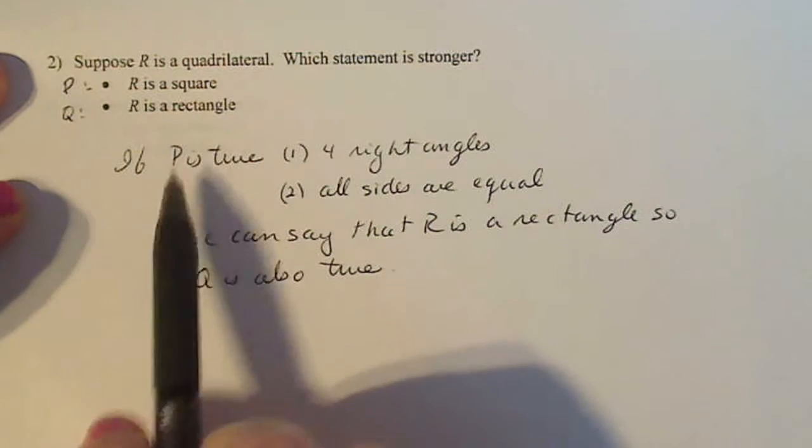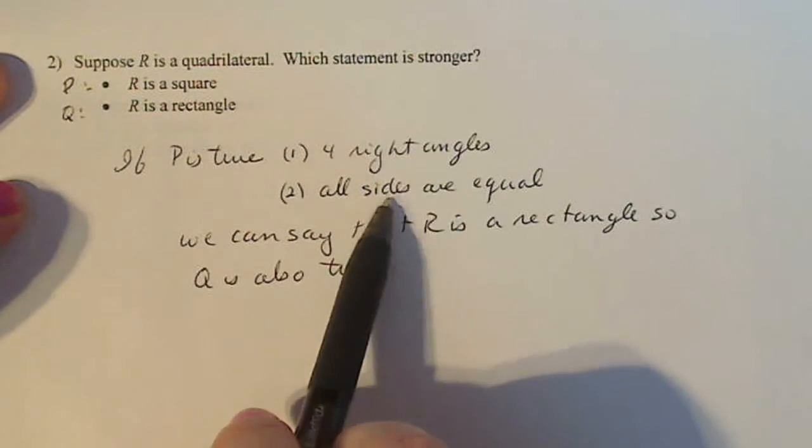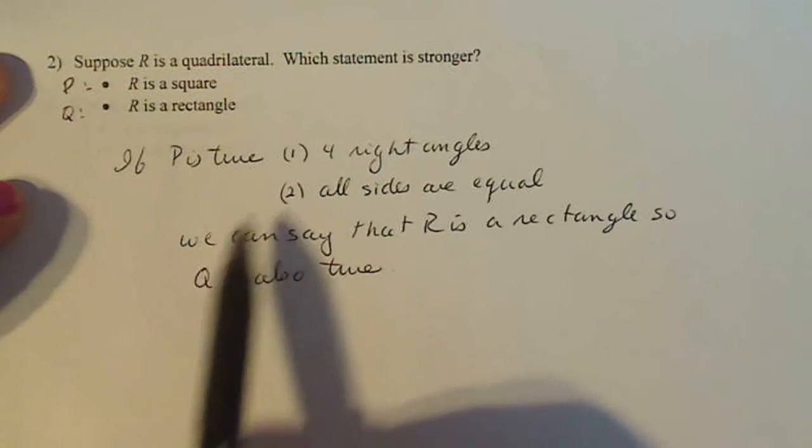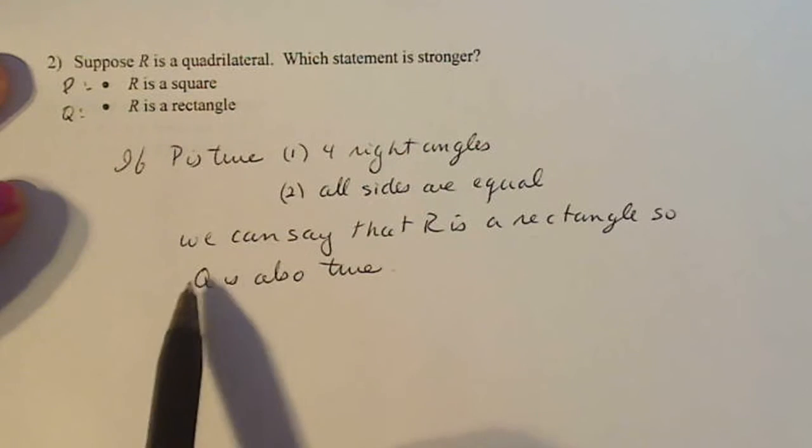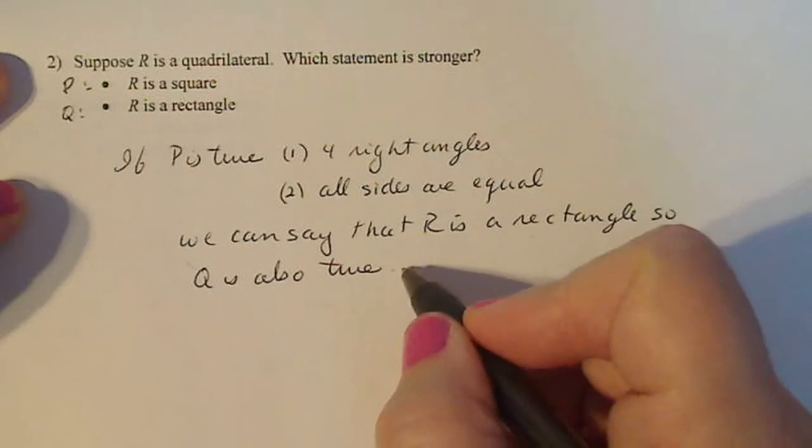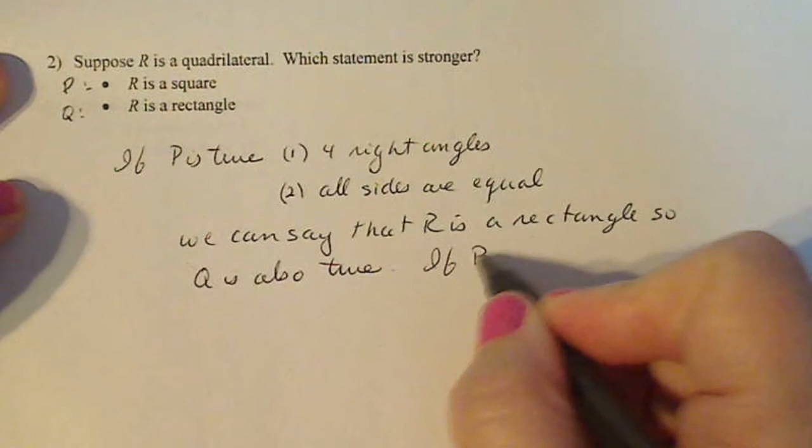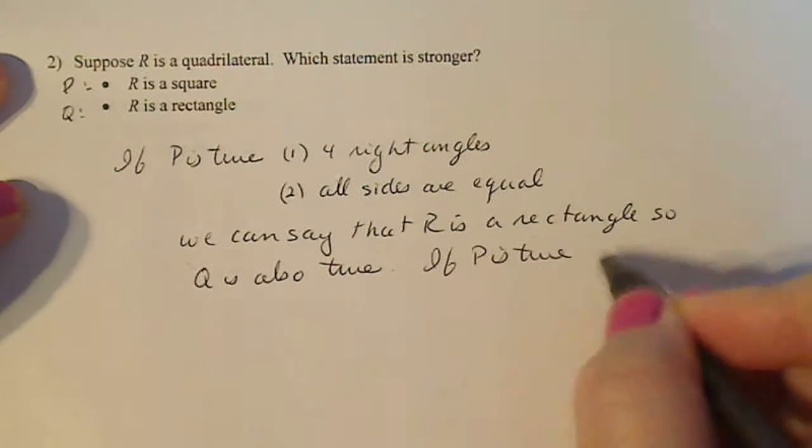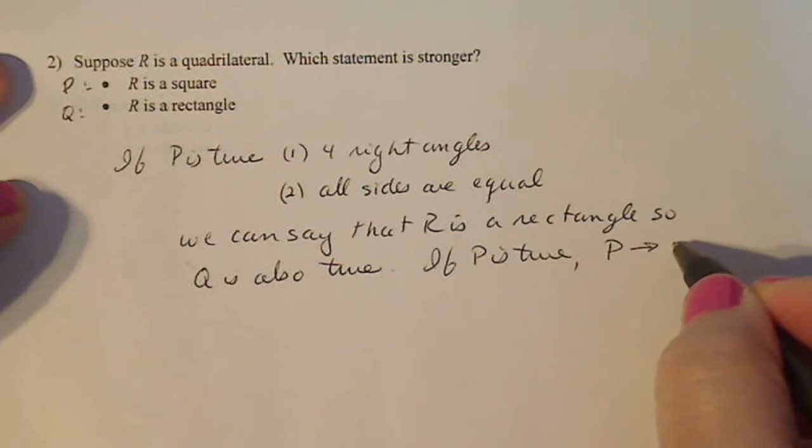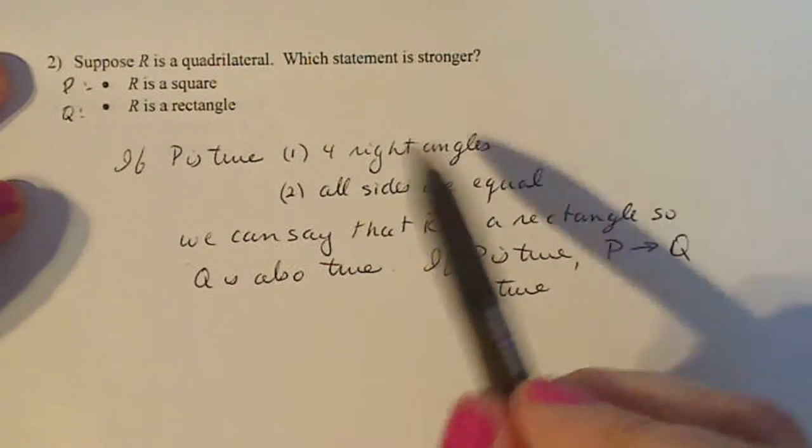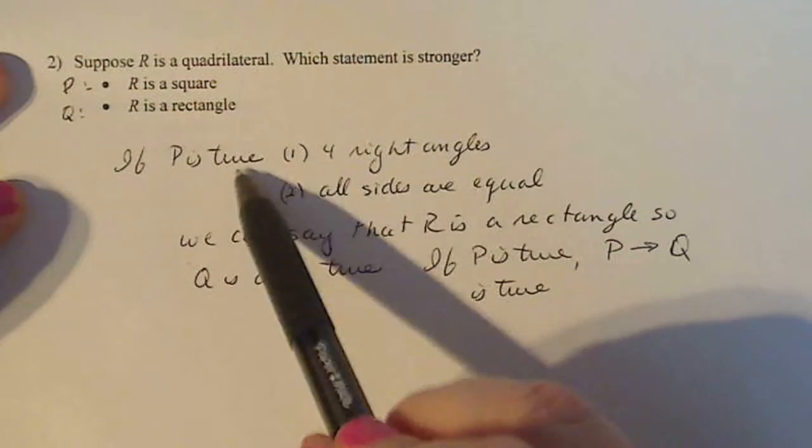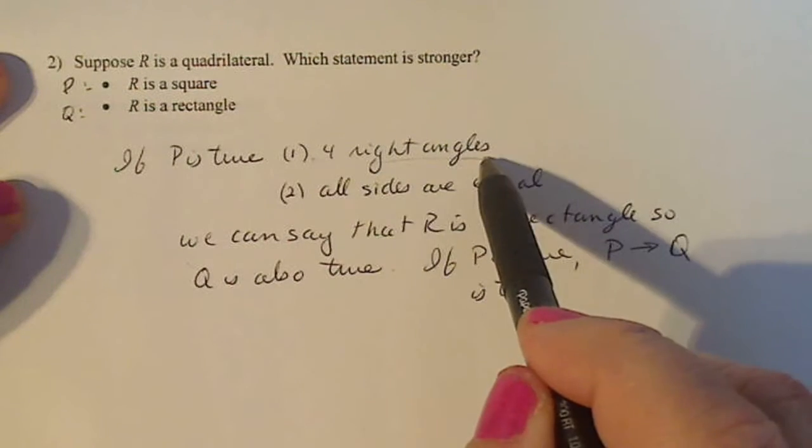So Q is also true always, no matter what. If P is a square, it has four right angles, all sides are equal. But since it has four right angles, it is a rectangle. So the statement R is a rectangle is also true. So we showed if P is true, P means that Q is also true. Basically, all squares are rectangles.